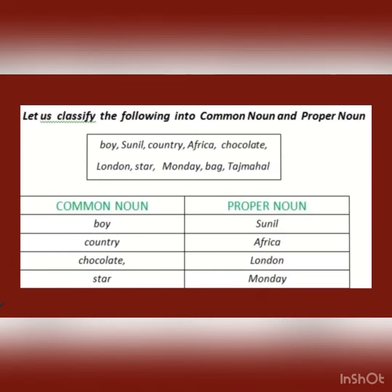Let's classify the following into common noun and proper noun. Boy, country, chocolate, stars — these are common nouns. Sunil, Africa, London, and Monday — these are proper nouns.